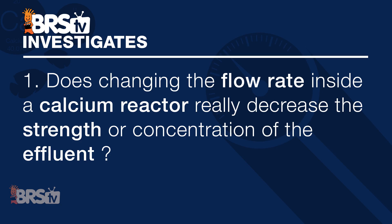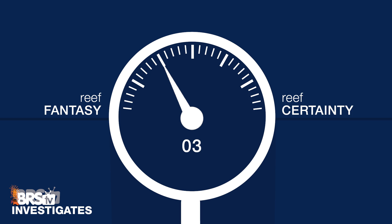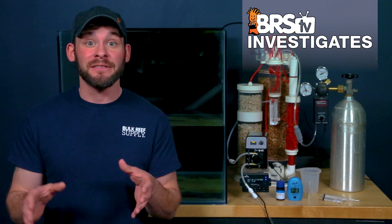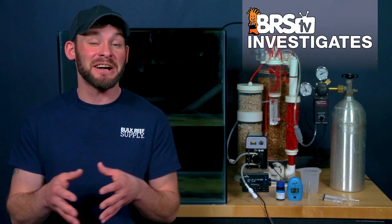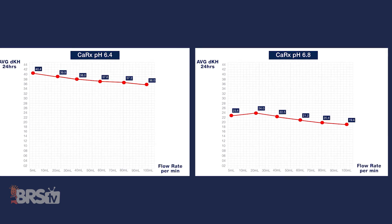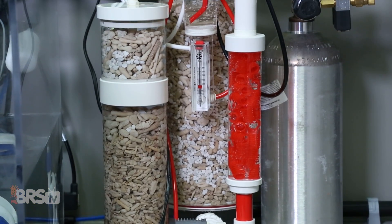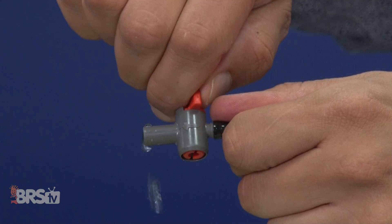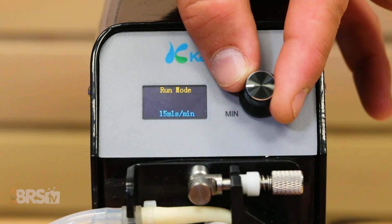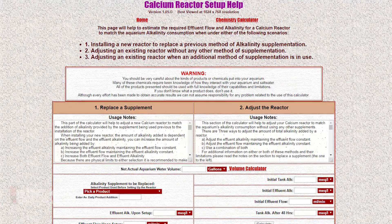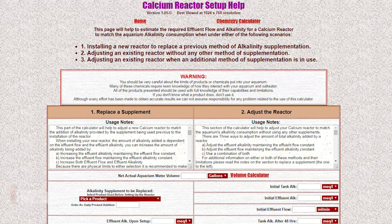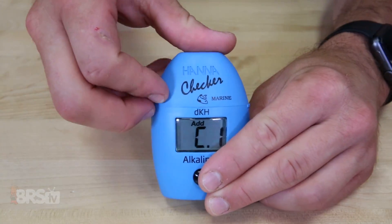So to answer today's question — does changing the flow rate inside a calcium reactor really decrease the strength or concentration of the effluent? — this one gets a three from me on the fantasy scale, since it's apparent that there is some degree of change, but really not in a manner that's worth confusing the calcium reactor adjustment conversation. In the end, reefers can expect to tune their reactors by just pegging the pH to achieve a stable concentration of effluent, decide on a dose or flow rate, and then make necessary adjustments either through the use of a calculator, much like you would with two-part, or through intuition by testing the tank's water and adjusting the dose.